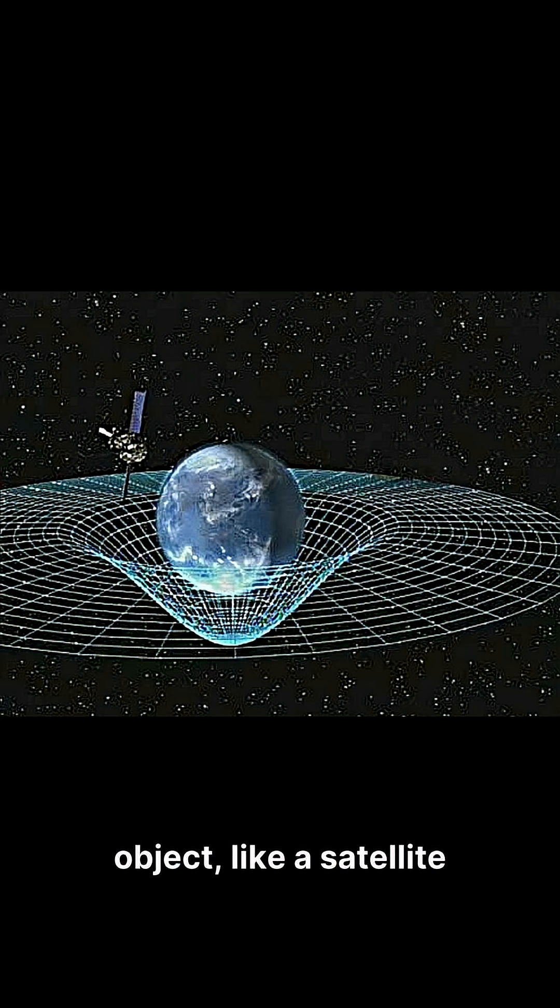Now imagine a smaller object, like a satellite or the moon, moving nearby. It follows the curves in spacetime, the way a marble rolls around a dent in a stretched sheet. This movement looks like gravity, but in reality, the object is simply following the shape of curved spacetime.